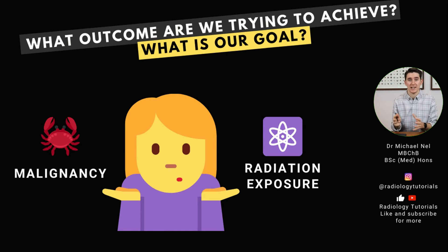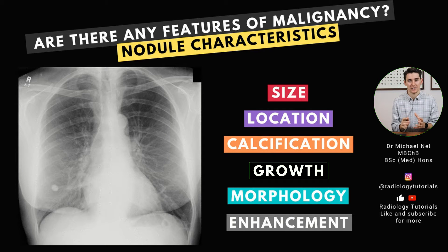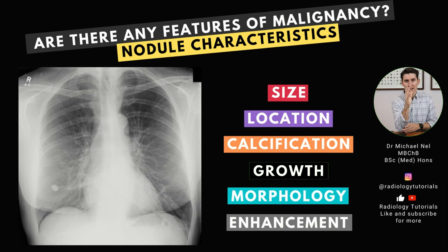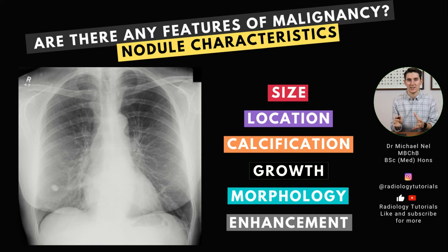Perhaps more important than figuring out the etiology is balancing the risk of malignancy against how much radiation exposure we're willing to subject our patient to. We obviously don't want to miss a malignancy, but we don't want to unnecessarily expose patients to radiation. What we're actually trying to figure out is what is the risk that this lesion is malignant, because that's going to determine our course of action. Luckily, there are characteristics of lesions that will make us think a lesion is more likely benign or malignant. I'm going to go through each of these six characteristics and show you how we can use them to decipher whether this represents a malignancy.